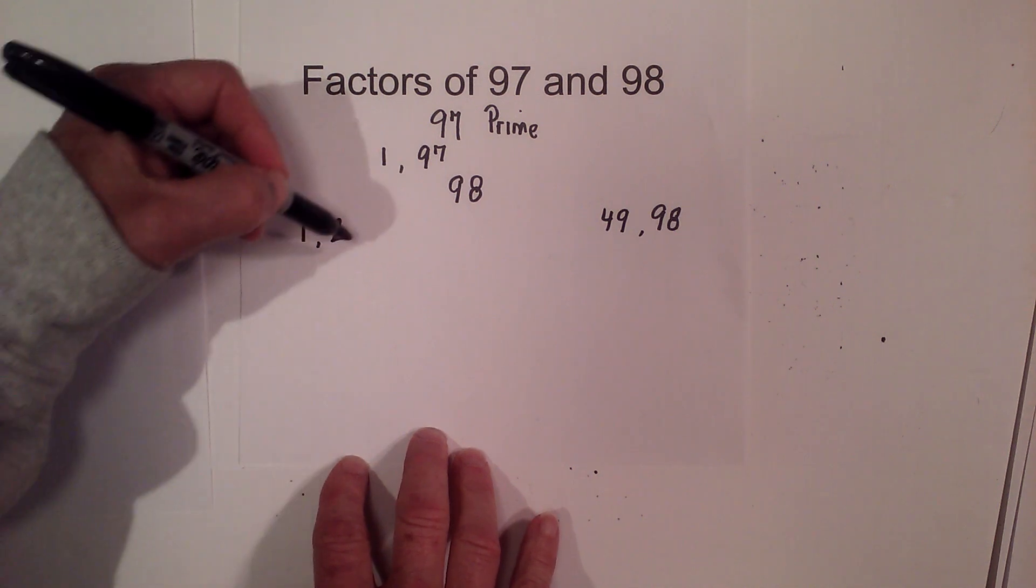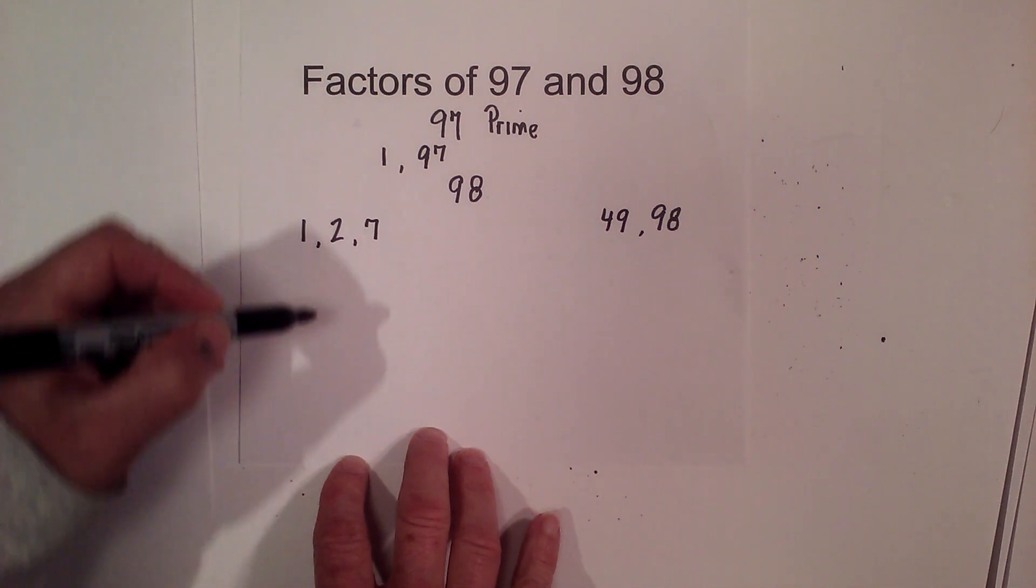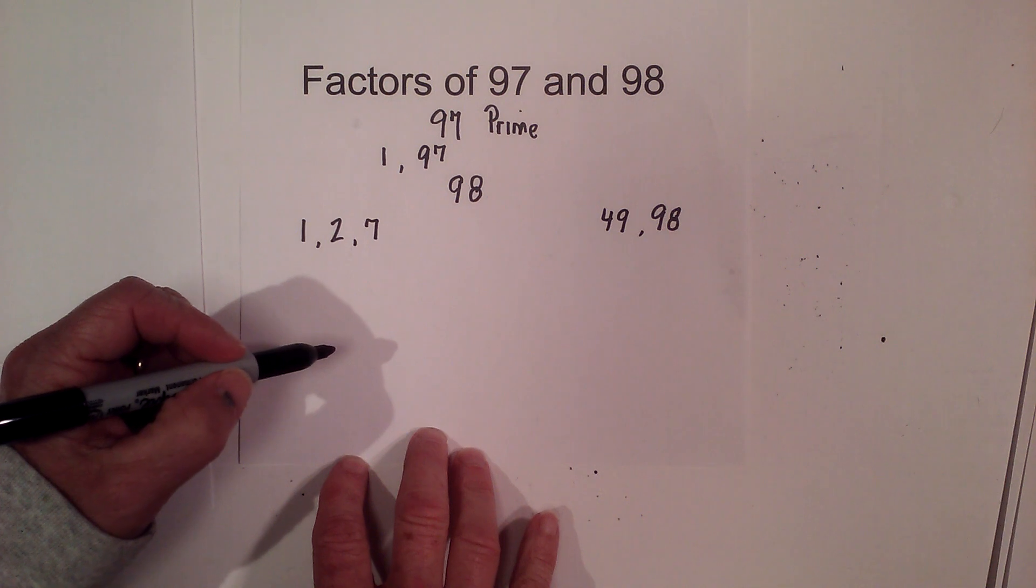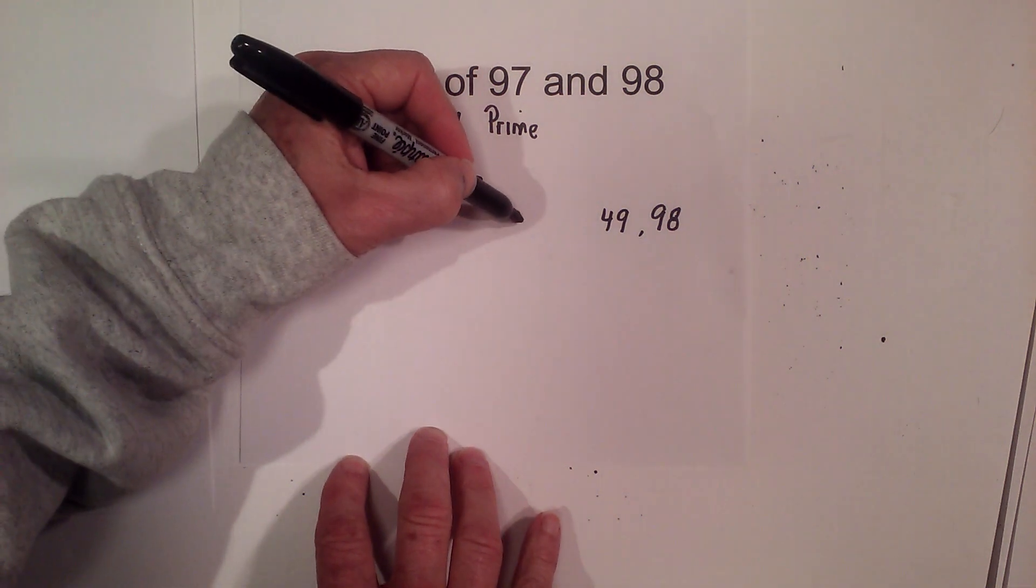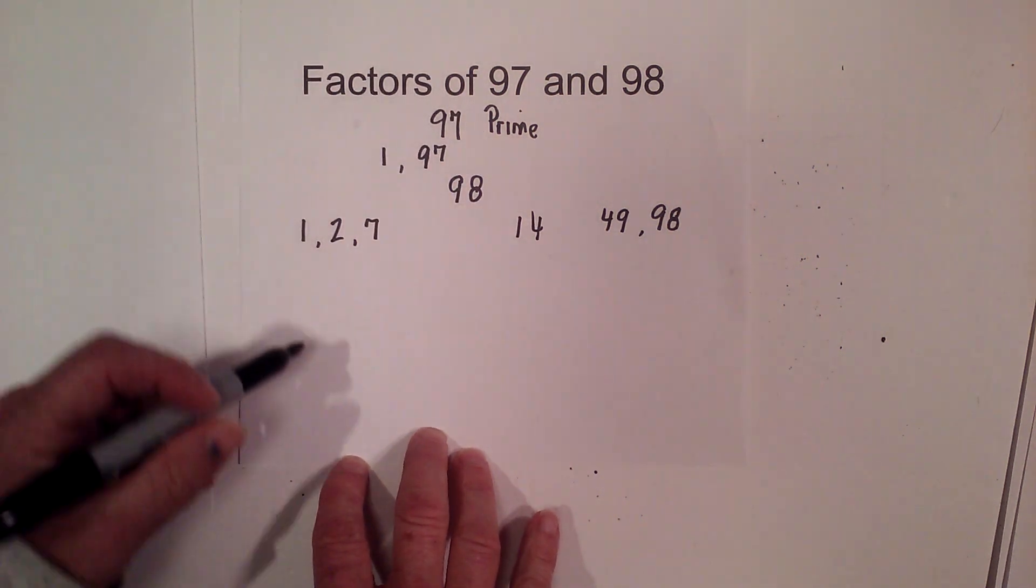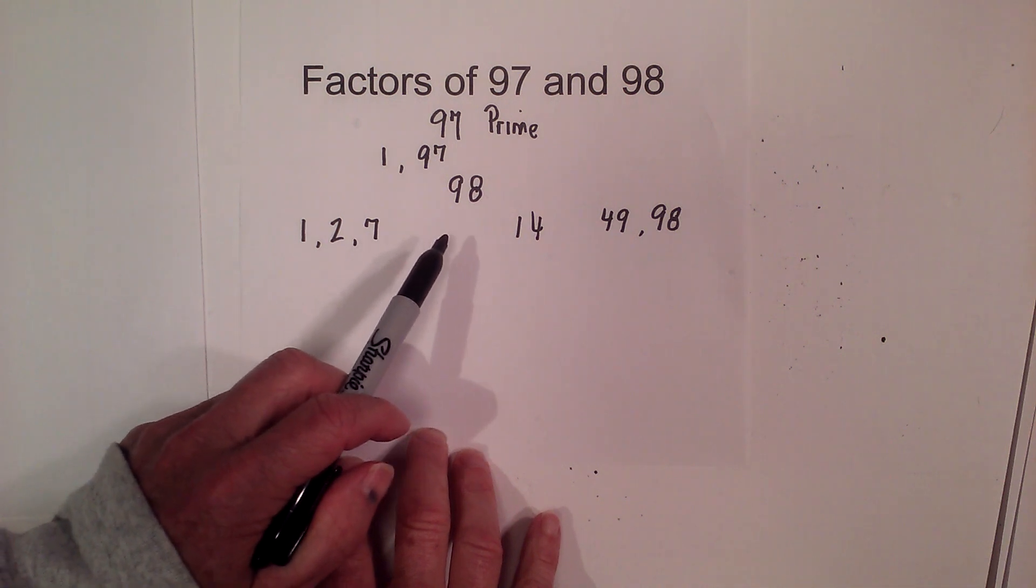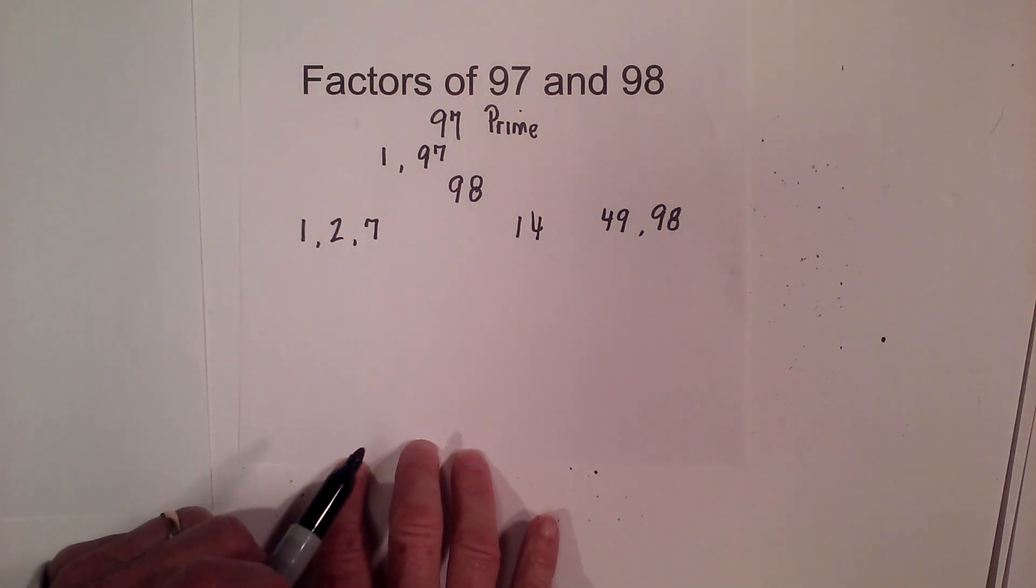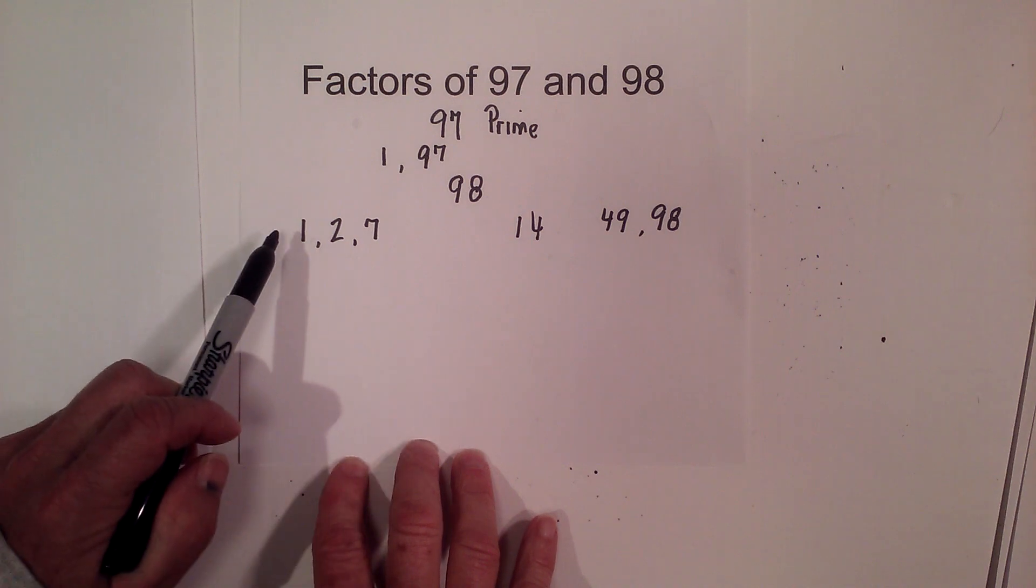5 or 6, but 7 goes into 98 and that is 7 times 14. And 8, 9, 10, 11, 12, or 13 will not go into that. So the factors of 98 are 1,